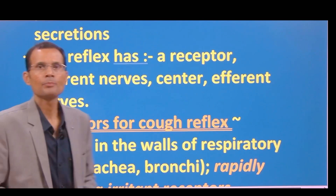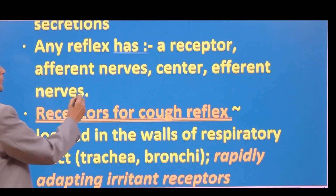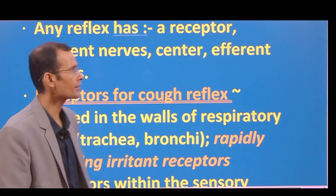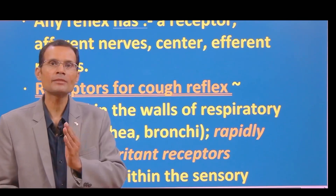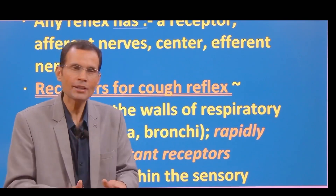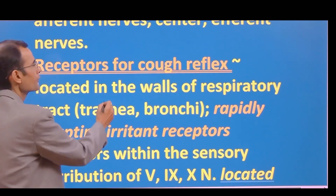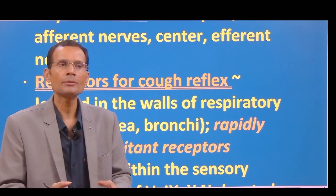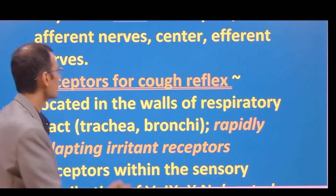Now let's talk about the circuitry of this reflex. Any reflex has a receptor which will initiate or trigger the reflex act. Then it has afferent nerves which carry impulses to the center where the reflex is integrated. And then it has efferent nerves which come back and act on the effector organ to elicit that reflex.